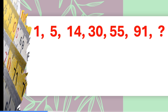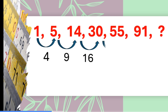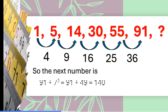Let's get the difference between two consecutive terms. The differences are 4, 9, 16, 25, and 36 — all perfect square numbers. 4 is the square of 2, 9 is the square of 3, 16 is 4 squared, 25 is 5 squared, 36 is 6 squared. So the next difference must be 7 squared. To get the next term, we add 49 to 91, which equals 140.